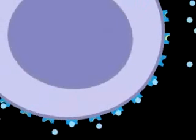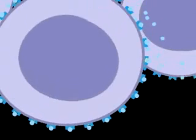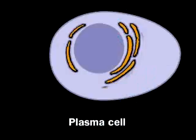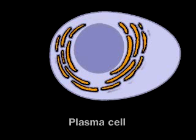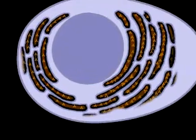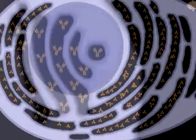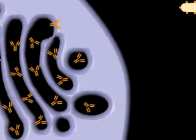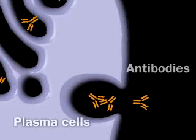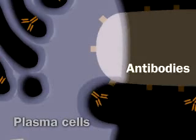The cytokines trigger the B cell to divide, producing a clone of cells that differentiate into plasma cells. The plasma cells produce identical antibody molecules specific for the antigenic determinant that was displayed by the first B cell, and by the macrophage that activated the first helper T cell. The humoral immune system responds to every antigen in this manner, but different antigenic determinants require different specific helper T cells and B cells.